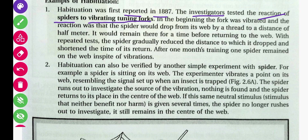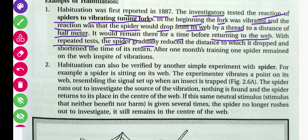In the spider experiment with a vibrating tuning fork: in the beginning, when the fork was vibrated, the spider would drop from its web by a thread to a distance of half a meter. It would remain there for a time before returning to the web. With repeated tests, the spider gradually reduced the distance to which it dropped and shortened the time of its return. After one month of training, one spider remained on the web in spite of the vibration.